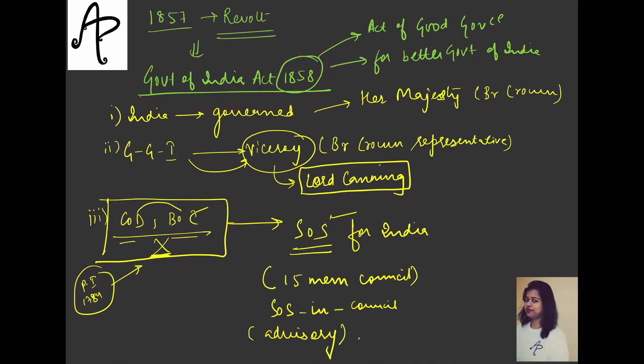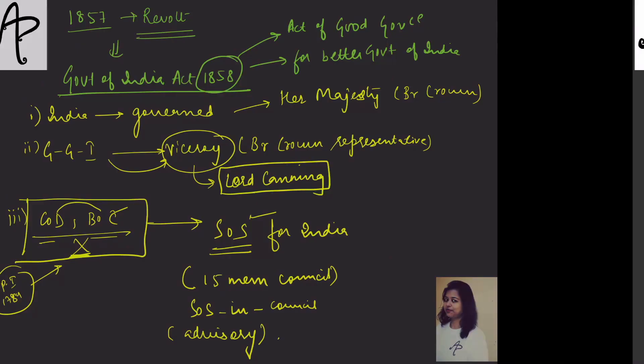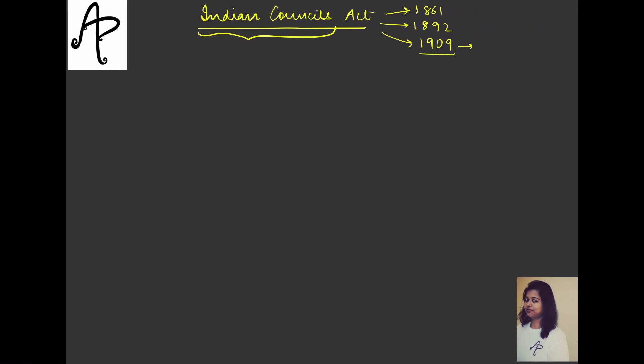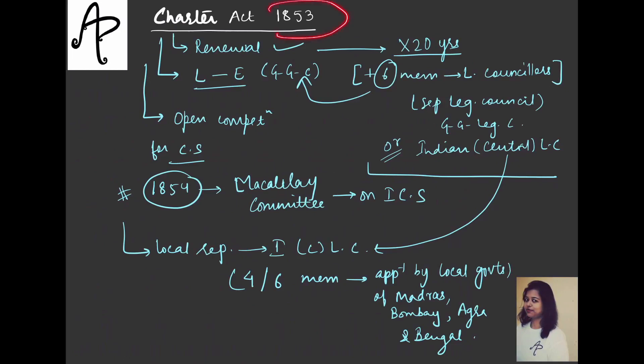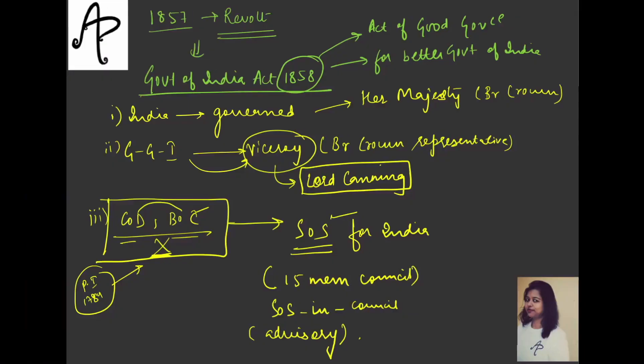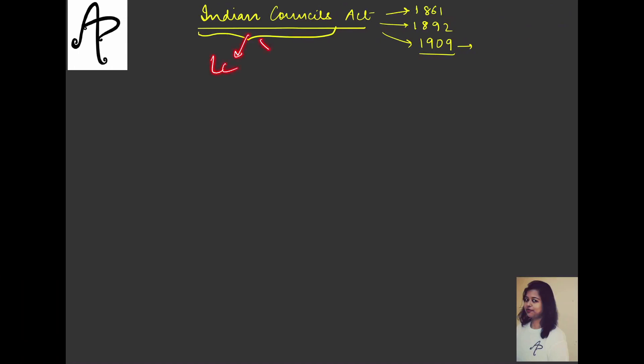Similarly, now they name it as Indian Councils Acts because after 1857, they immediately passed this Act for the sake of managing things. They did not change the structure, but just improved the administration by taking more power, the whole power for the British Crown. They understood there is a need to have more and more Indians in the Councils.